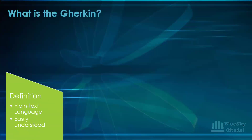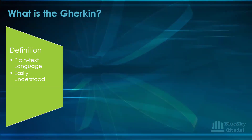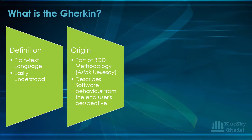Gherkin is a plain text language with a specific structure used to write down scenarios and requirements in a way that is easily understood by non-technical stakeholders. In the software world, it's our duty to translate technical terms into layman's language so that stakeholders can have a better understanding rather than just using jargon.